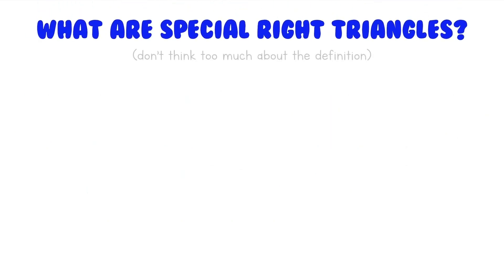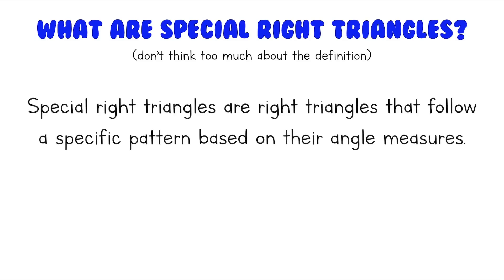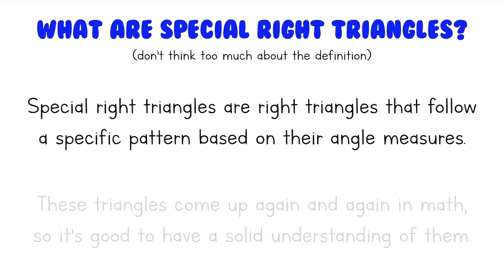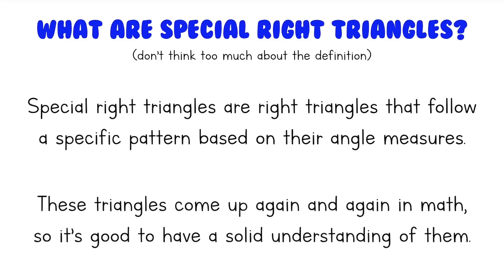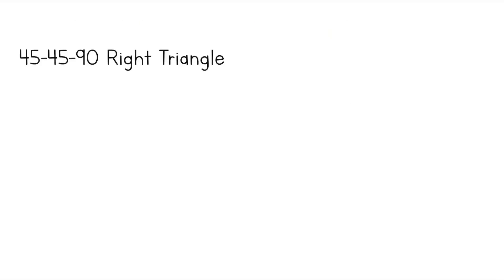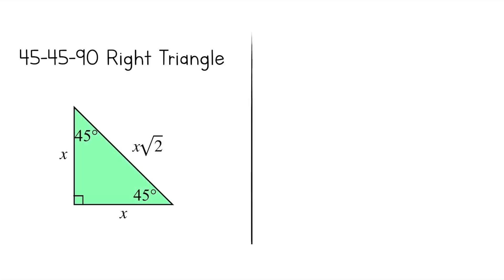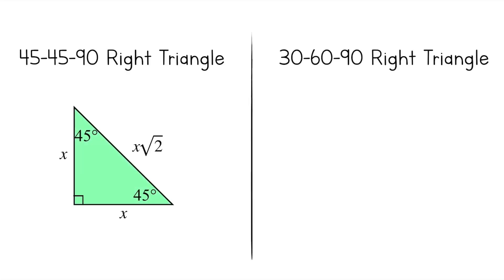So what are special right triangles? Special right triangles are right triangles that follow a specific pattern based on their angle measures. These triangles come up again and again in math, so it's really great to have a solid understanding of them. We'll be going over two different types today. The first is called a 45-45-90 right triangle, and the second is called a 30-60-90 right triangle.